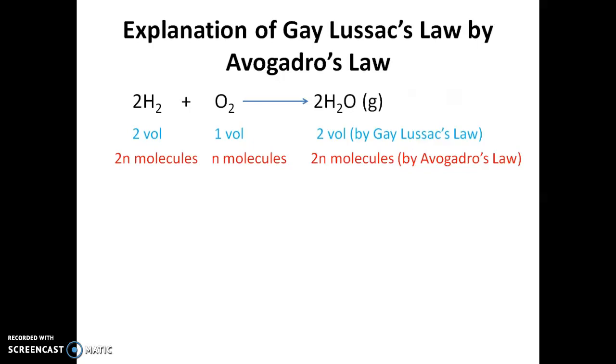If you consider Avogadro's law, you will find it is 2N molecules of hydrogen, N molecules of oxygen, 2N molecules of water. Because you can see, oxygen one volume if contains N molecules, then hydrogen two volumes will contain 2N molecules. And similar for water.